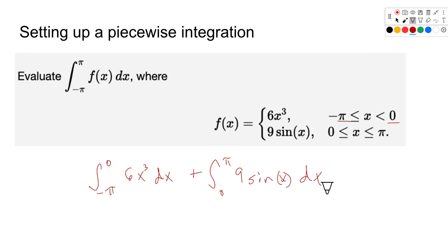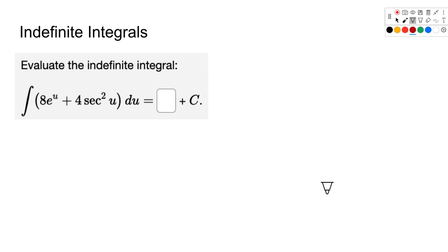There are also problems asking for the indefinite integral — that just means no boundaries are given. We get the antiderivative and add plus C. Watch out: there are one or two problems in the homework where they don't put the plus C in for you, so make sure you include it or it'll be marked wrong. To summarize: indefinite integral means no boundaries, just getting the antiderivative in general with plus C; definite integral means we have boundaries and can find a specific exact area.